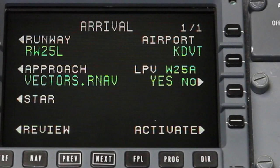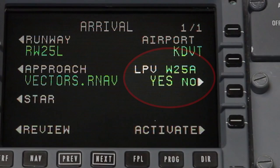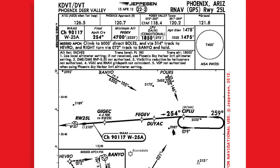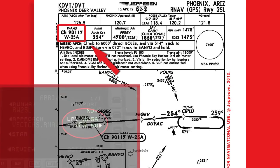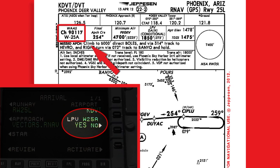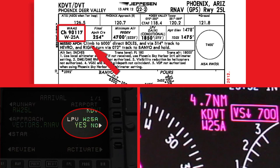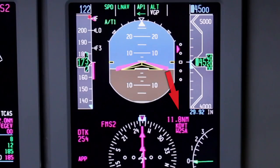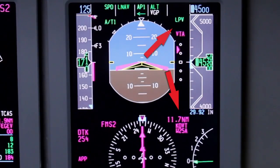Each RNAV approach with LPV minimums is identified by a unique approach identifier, or approach ID. The pilot must verify the approach ID on the approach chart, the arrival page on the MCDU, and the PFD. The approach ID is displayed on the PFD when LPV is active.